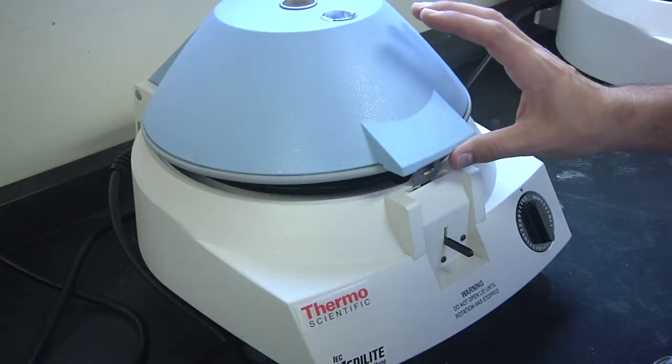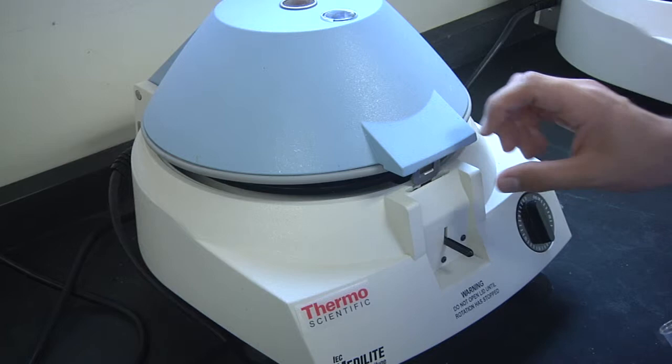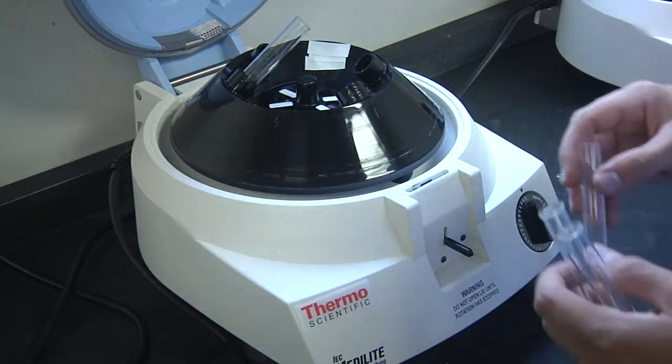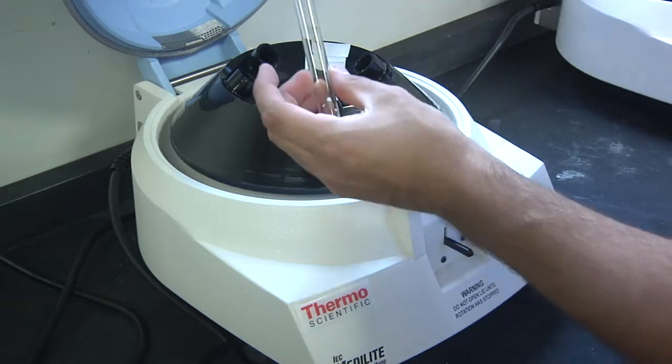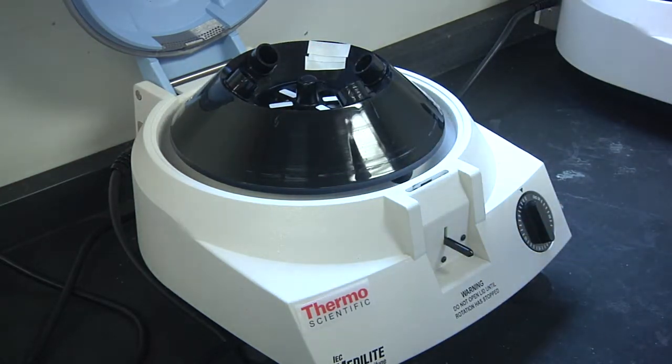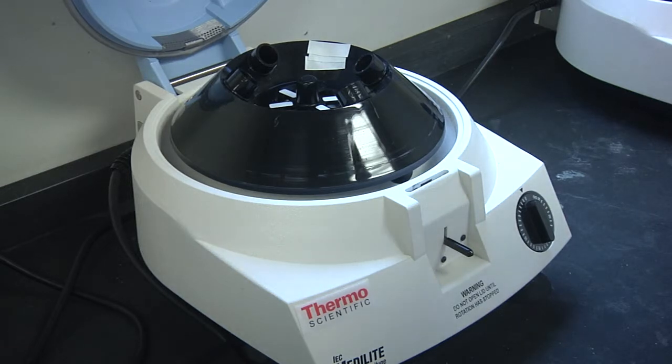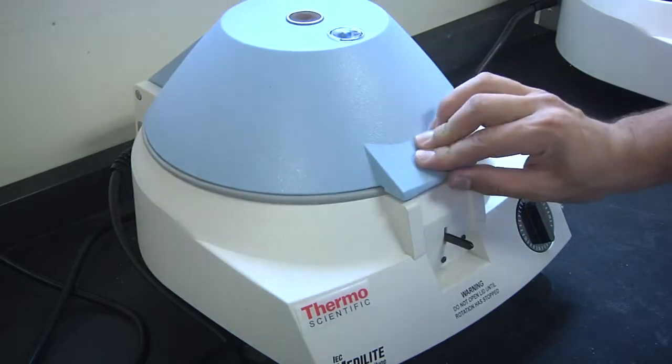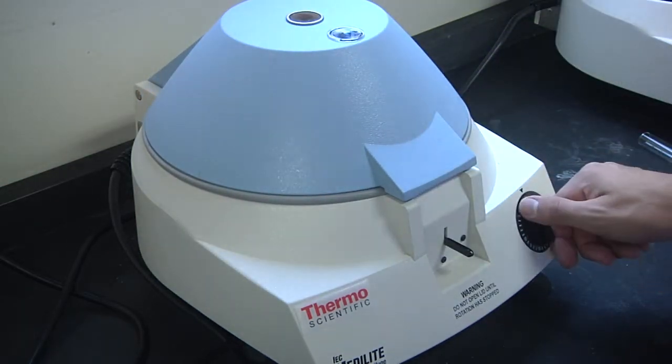So what we have to do is we have to find smaller test tubes. Here I have some smaller test tubes. I will transfer the liquids into these smaller test tubes and put them back into the centrifuge.